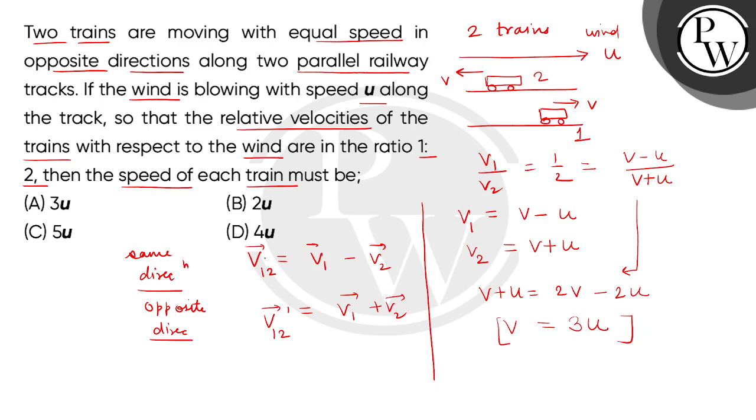After considering these velocity of each train, we will get the correct answer for the speed of each train in terms of wind as option number A. Thank you.